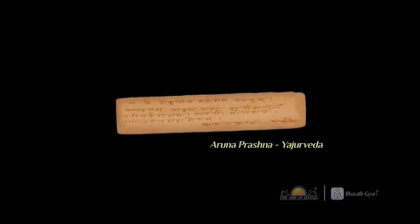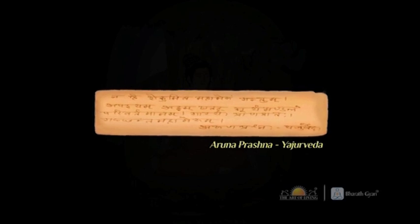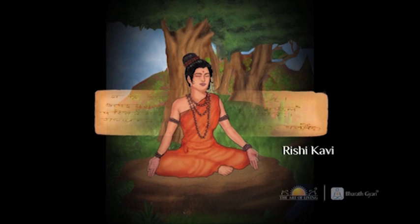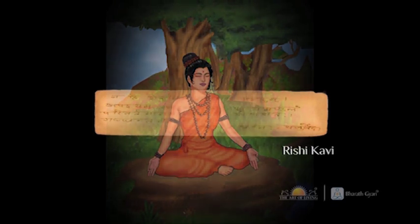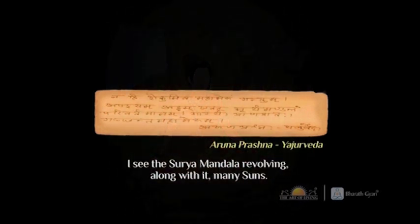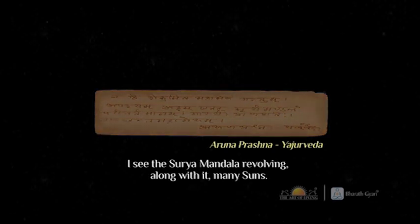The Yajurveda, Arunaprasna, records the observations of a lady rishi called Kavi, describing the Suryamandala. She states: 'I see the Suryamandala revolving, and along with it many suns.'